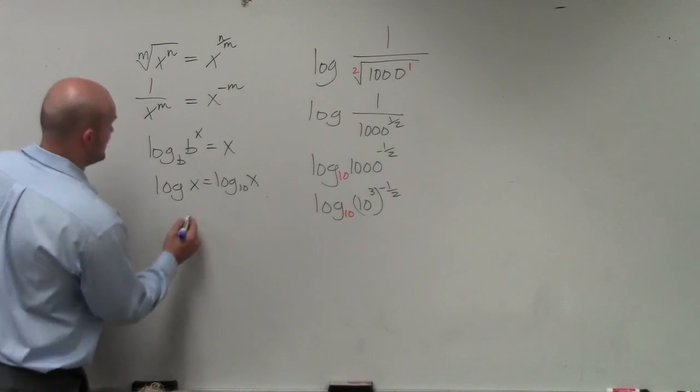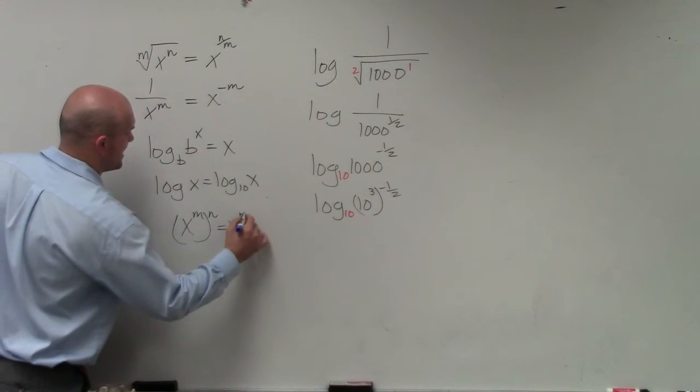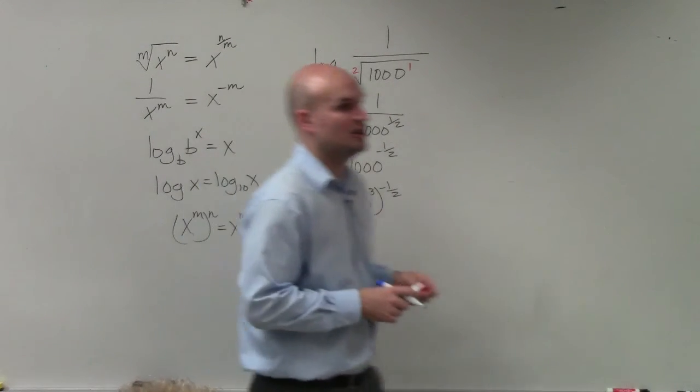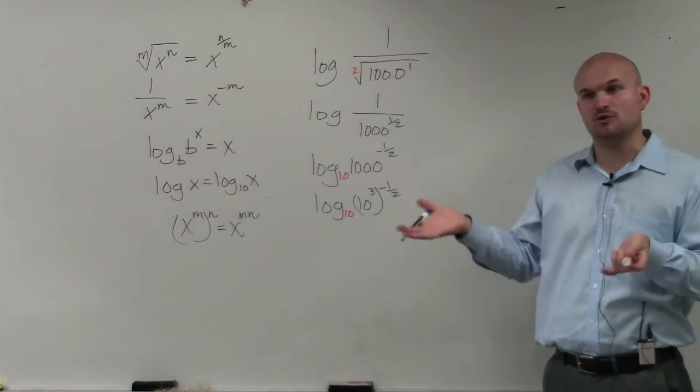Then we have to remember another property of exponents. x to the m raised to the n equals x to the m times n. That's called the power rule. Whenever you have an exponent raised to a power, you multiply the powers.